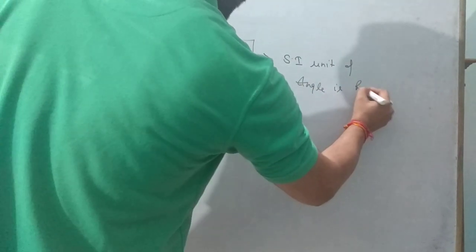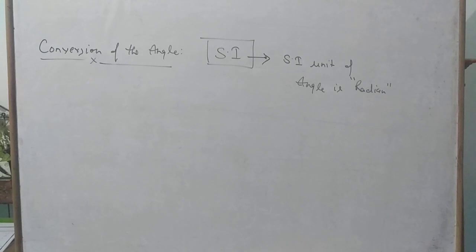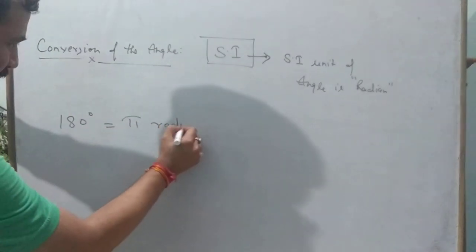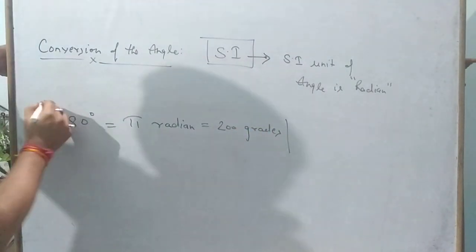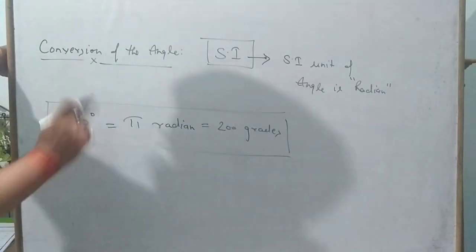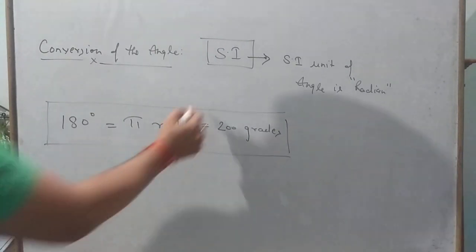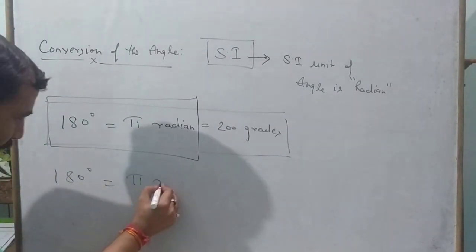Till class 10 we used angles in degrees, but now in class 11 we use the SI unit, which is radians. The conversion is: 180 degrees equals pi radians equals 200 grades. So 1 degree equals pi by 180 radians. Do not confuse: pi equals 180 degrees means 180 degrees equals pi radians.